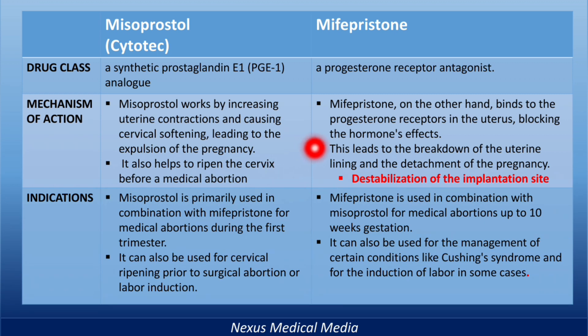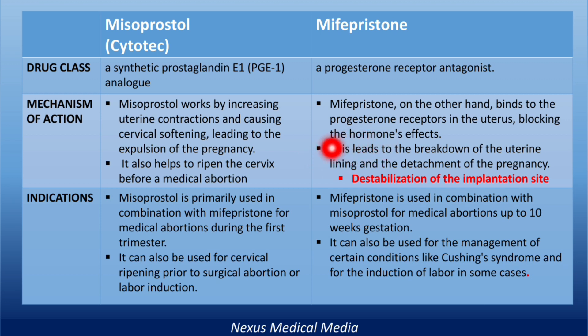Mifepristone, on the other hand, binds to the progesterone receptor in the uterus, blocking the effects of progesterone. This leads to breakdown of the uterine lining and the detachment of the pregnancy. This concept is known as destabilization of the implantation site.